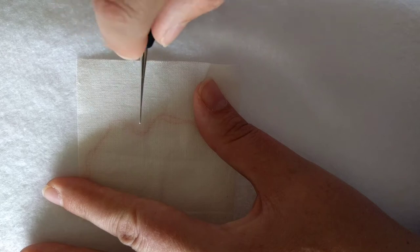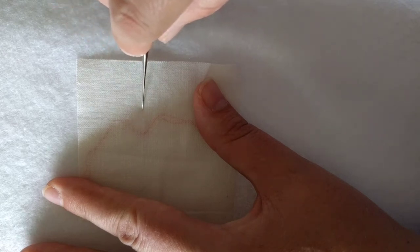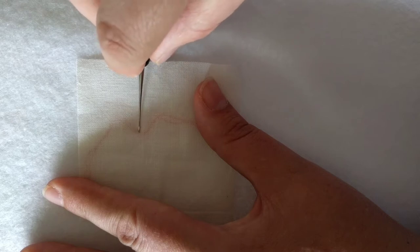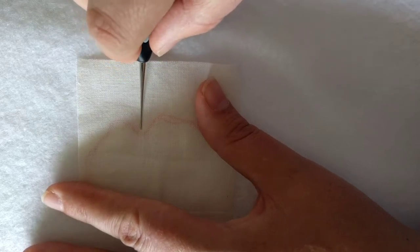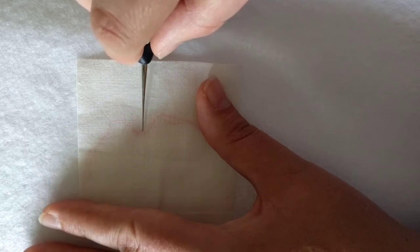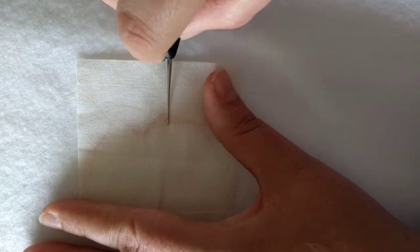This little hook can fit in between the warp and weft of the fabric and can be used to fish this out. Now I'm going to show you how I do that. It's a little finicky, it's a little slow, and every thread you have to remove is different.